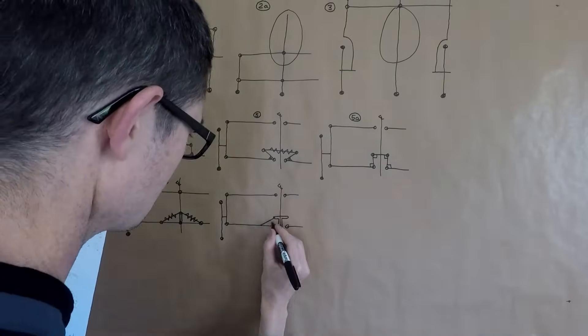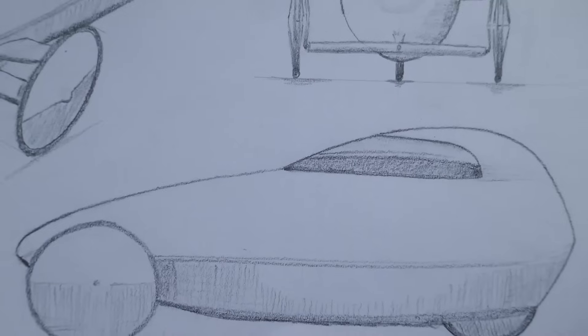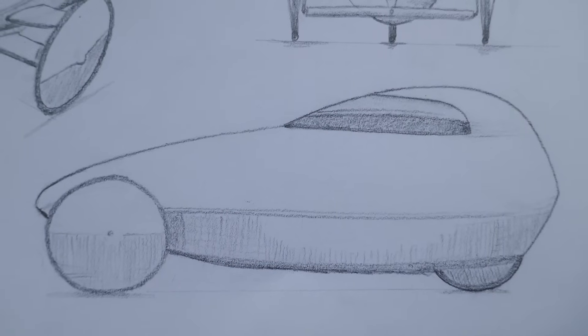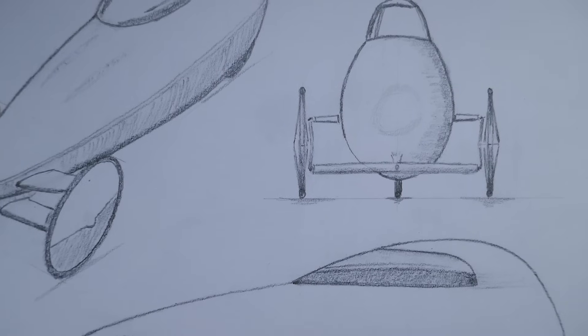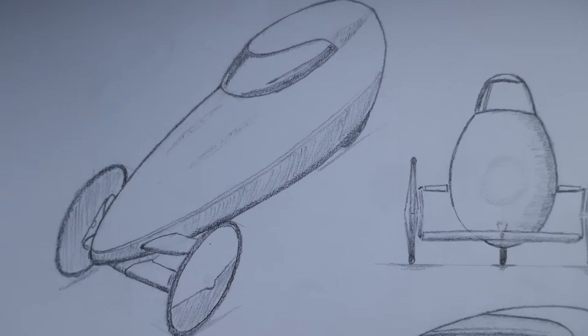A velomobile is a human-powered enclosed bicycle and what I want is a recumbent, streamlined, tilting three-wheeler. Here's my basic design. It's a reverse trike with two steering wheels at the front and a single driven wheel at the back.